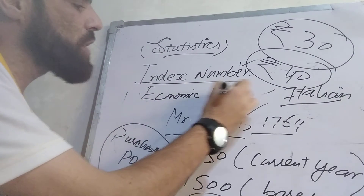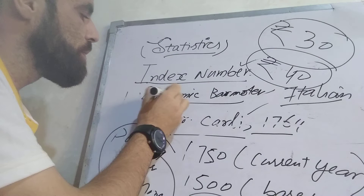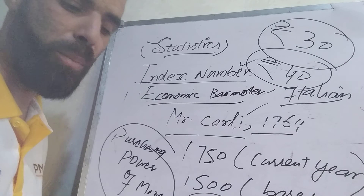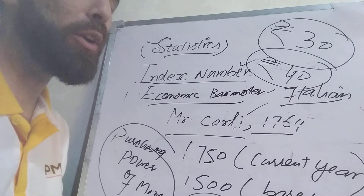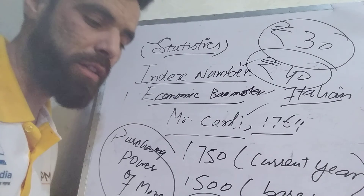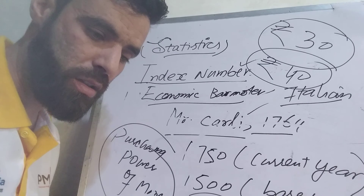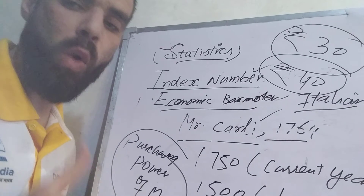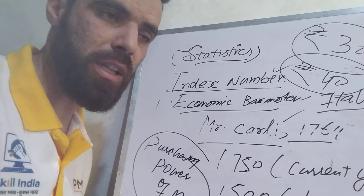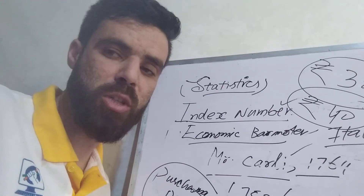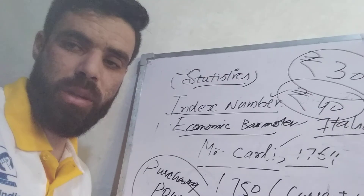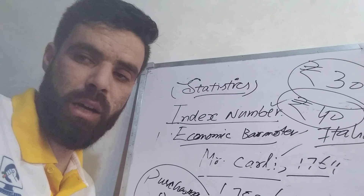You can get a question in your examination like 'index numbers are also known as' — and you can say these are the economic barometers. I will continue this series further. In the next lesson, we will talk about the types of index numbers and the various problems faced in their construction. After this video, I will post another video on MCQs of this lesson. Hope to see you in the next video, and never forget to subscribe to my channel for further updates. Thank you.